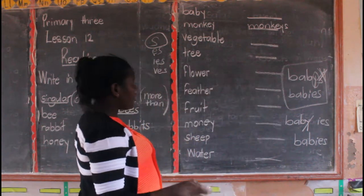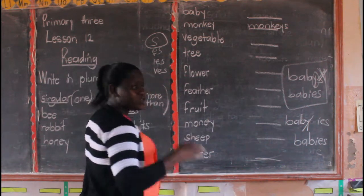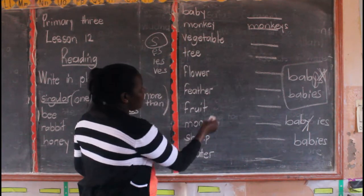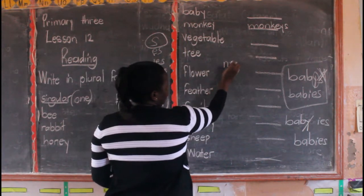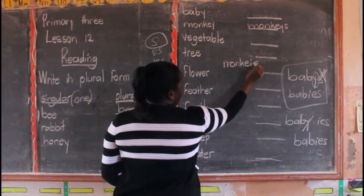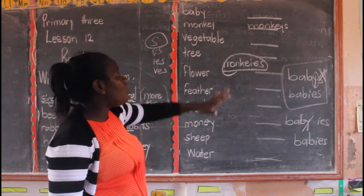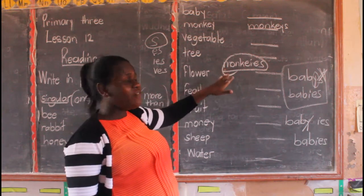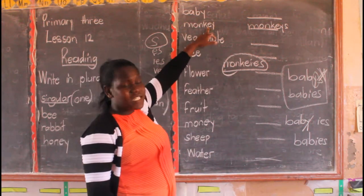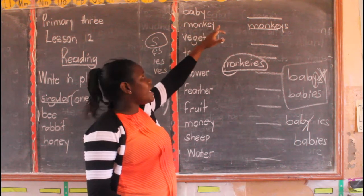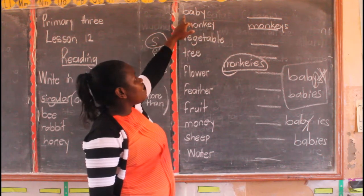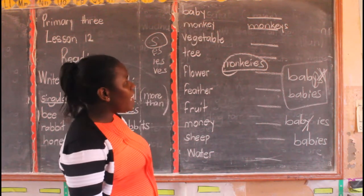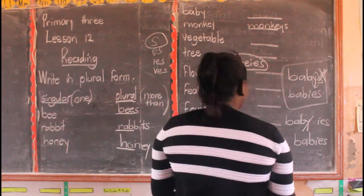But for those of you, when they give you monkey, don't just assume that all nouns which end with Y — you kill Y and add IES to get monkies. That is very bad. Those nouns which end with Y and the next letter to Y is a vowel, you just add S. Those which end with Y and the next letter is a consonant, you cancel Y and add IES. Are we clear?